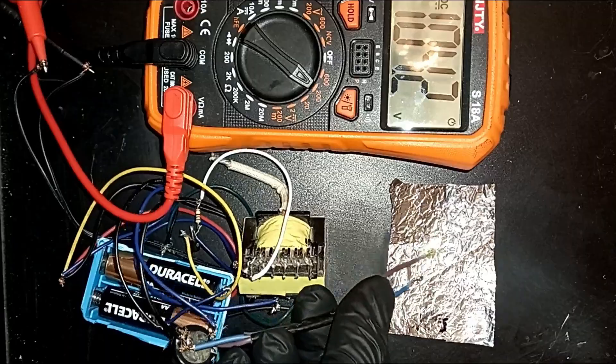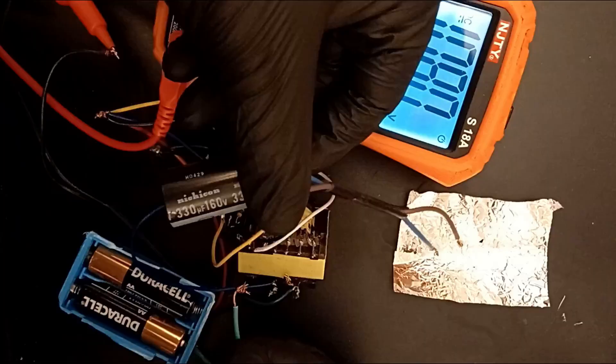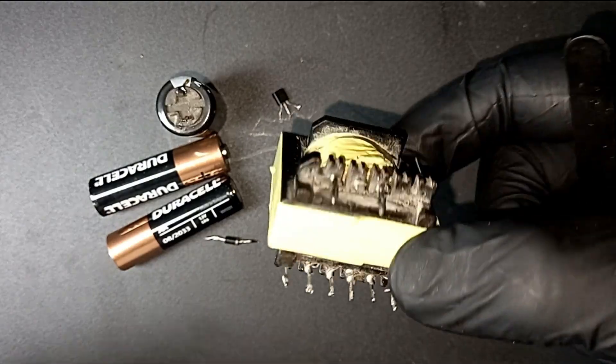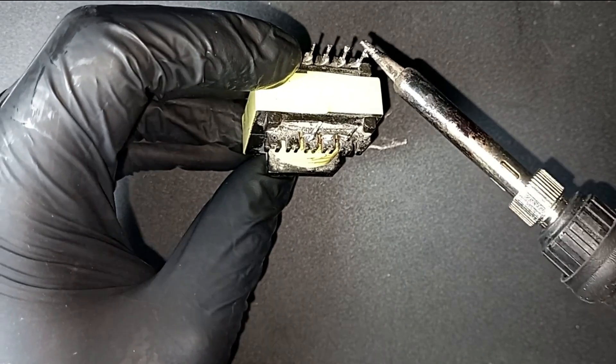Welcome to the channel. Today I'll show you how to make a simple circuit called a Joule Thief. The trick of this circuit is that it can generate high voltage even from a nearly dead 1.5 volt battery.